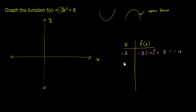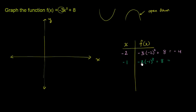Let's see what happens when x equals negative 1. f of x equals negative 3 times negative 1 squared plus 8. Negative 1 squared is just 1, times negative 3 is negative 3. Negative 3 plus 8 is 5.